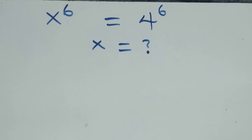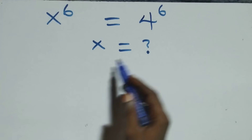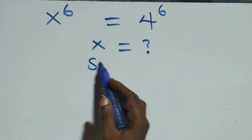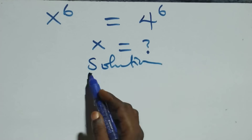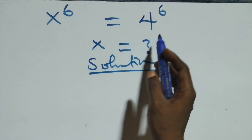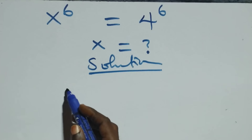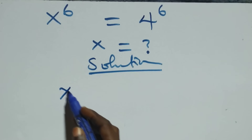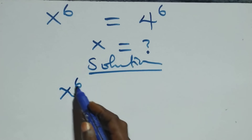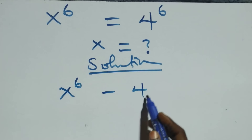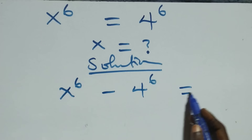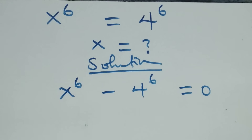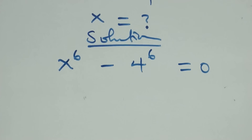Hello, you're welcome. How to solve this nice exponential equation. From what we have here, we can take four raised to power six to the left hand side and we have x raised to power six minus four raised to power six equals zero.